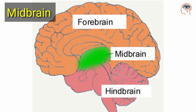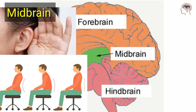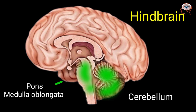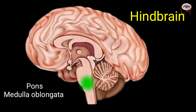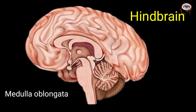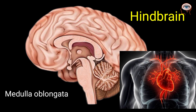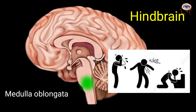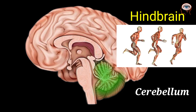The midbrain lies between the hindbrain and forebrain and controls auditory reflexes and posture. The hindbrain consists of three parts: medulla oblongata, cerebellum, and pons. The medulla oblongata lies at the top of the spinal cord and controls functions like breathing, heart rate, and blood pressure. It also controls reflexes such as vomiting, coughing, and sneezing.